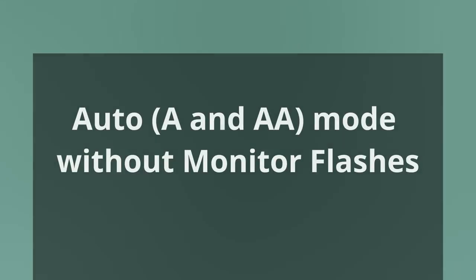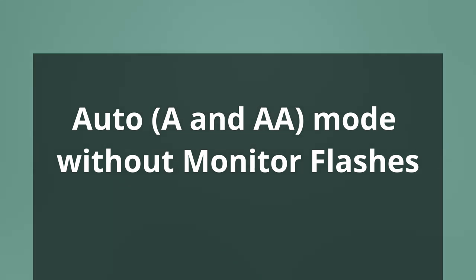Let's talk about auto flash without monitor flashes. This technology has been introduced during the 20th century, and while the modern version improves upon the original releases, it basically works in the same way. In order to calculate the correct output, the speed light needs to know your ISO and aperture, which are usually automatically communicated through the hot shoe. We spoke about the relationship between ISO, aperture and flash power in the first video.